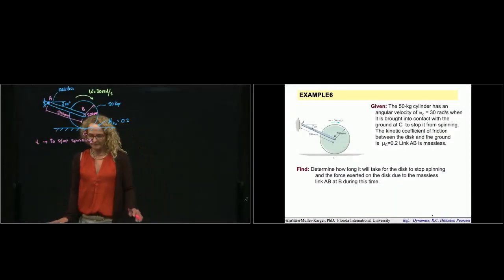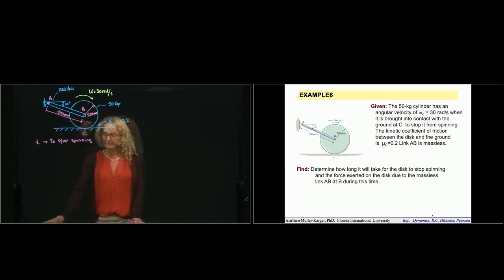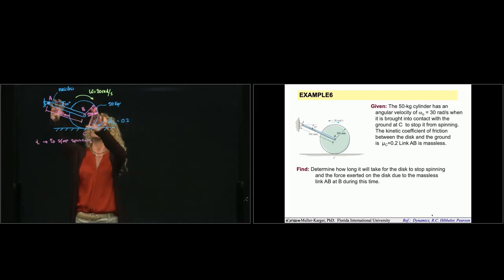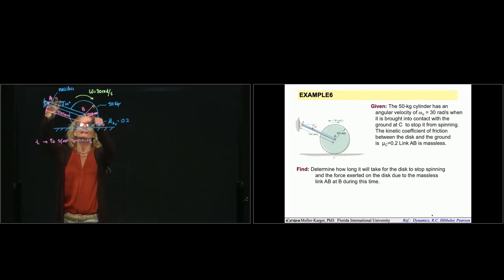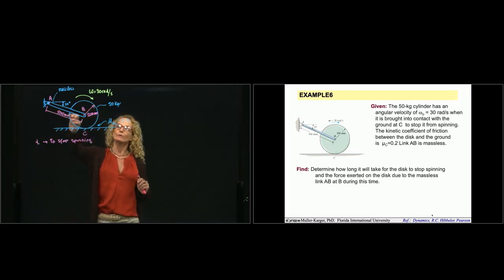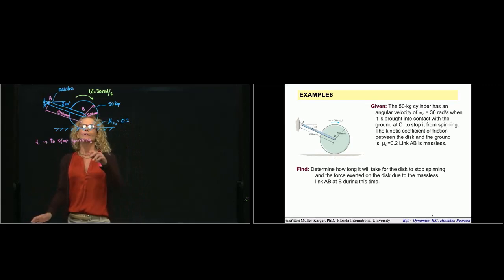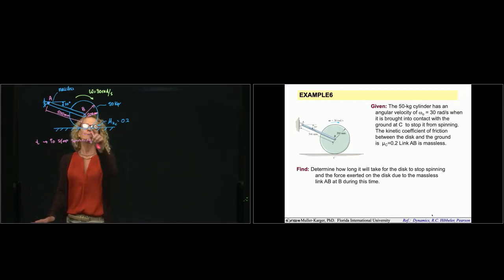This is problem 6 from chapter 19. We have a 50 kilogram cylinder with an angular velocity of 30 radians per second, and it's brought into contact with surface C. You can imagine that this is spinning, and then it gets in contact with surface C. Between that disc or cylinder and the surface, there is a kinetic coefficient of friction of 0.2. We are being asked how long will that spin until it stops — what is the time until it stops?